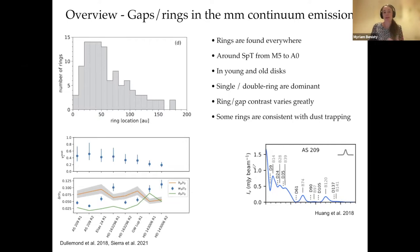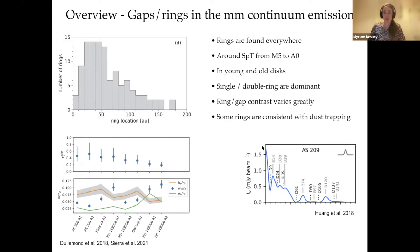The properties of the disk vary greatly. For example, the contrast between the ring and the gap can be really high — basically an almost empty gap in the dust — and sometimes you have very shallow gaps. This is one example of AS 209, which has multiple rings and gaps. From the radial profile, we can see very shallow and very deep gaps.